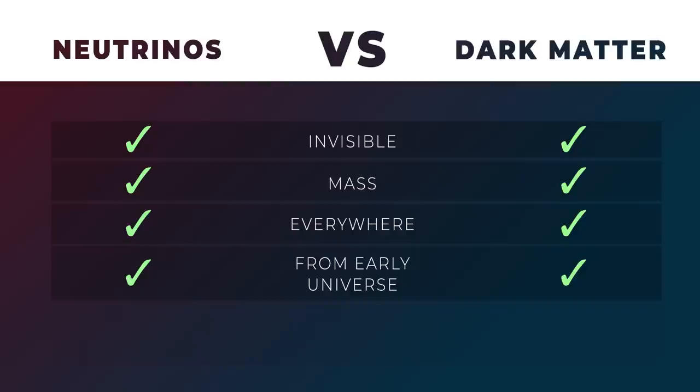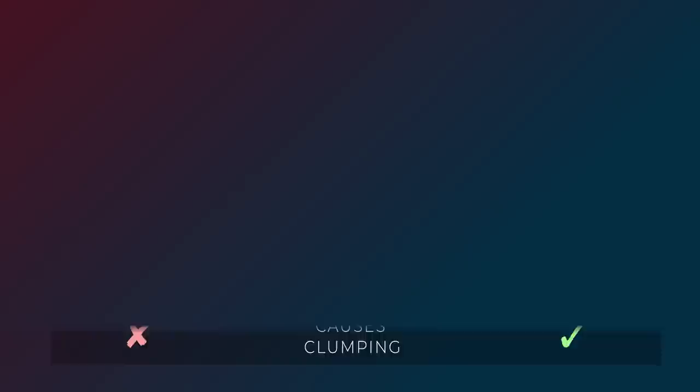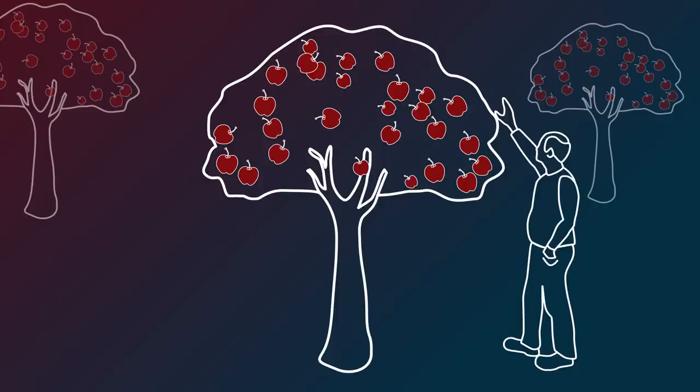But we know that dark matter has to be slow moving enough or massive enough to cause matter to clump together. It's like trying to gather as many apples as possible while walking through an orchard. You can gather a lot more if you're really tall and walking slowly versus if you're a child running through the trees.